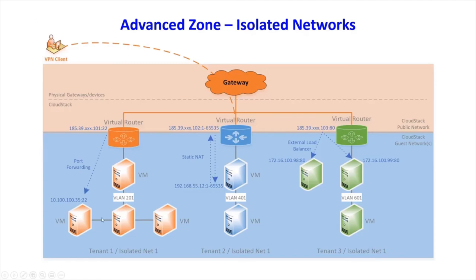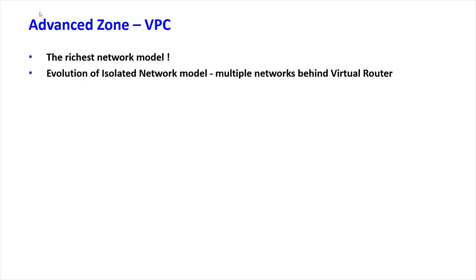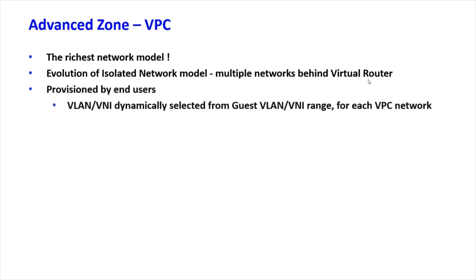So port forwarding, static NAT, external load balancing, and remote VPN are the four main network services provided by simple isolated networks. Later, someone said: we have only one network behind the virtual router — let's evolve this further. This evolution of isolated networks is the so-called VPC. With VPCs, you build on top of the existing isolated network model and can have multiple networks behind a single virtual router.